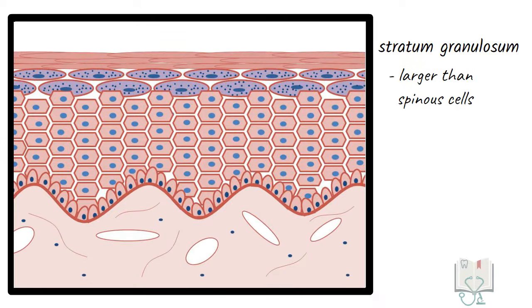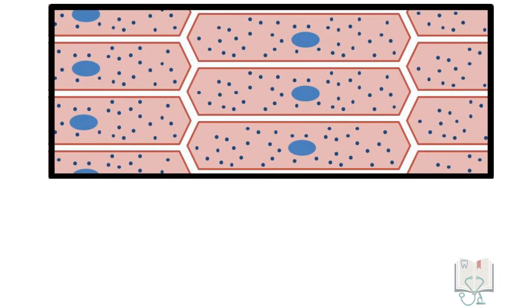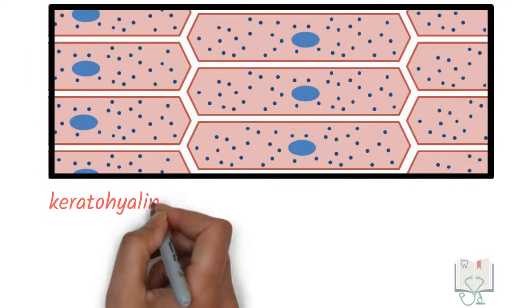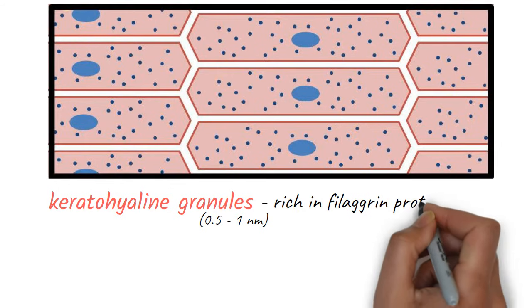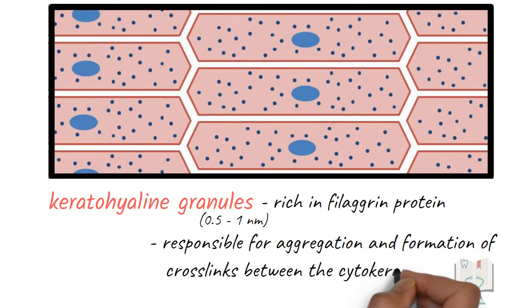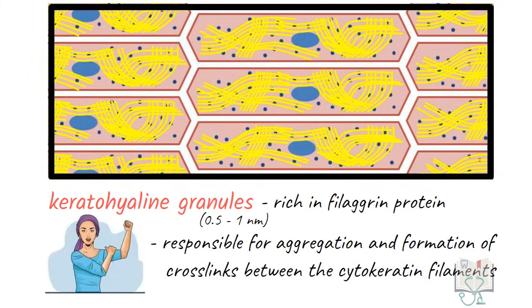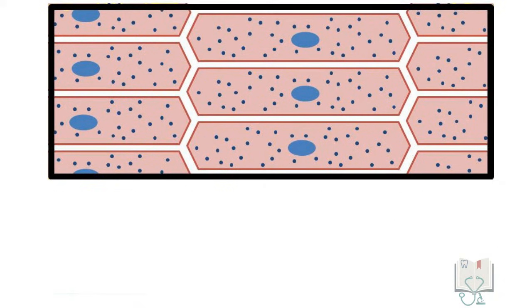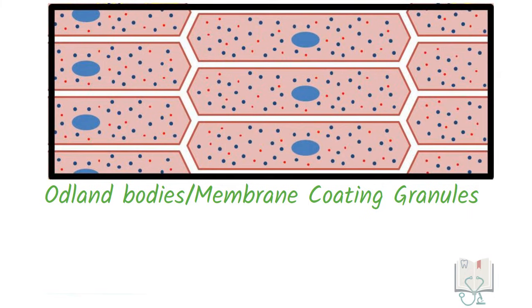In stratum granulosum, the cells are larger than the spinous cells; they are flatter and wider in shape. The nucleus starts showing signs of degeneration or pyknosis. The cells appear granular due to the presence of keratohyalin granules, which are 0.5 to 1 nanometers in size and are rich in filaggrin proteins. These proteins are responsible for aggregation and formation of cross-links between the cytokeratin filaments, forming bundles, which provides strength to the epithelium.